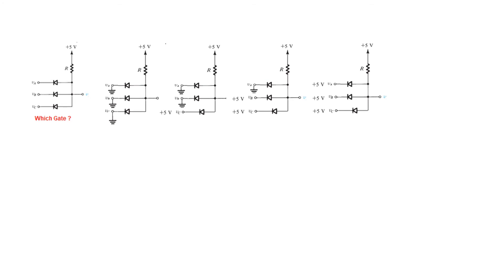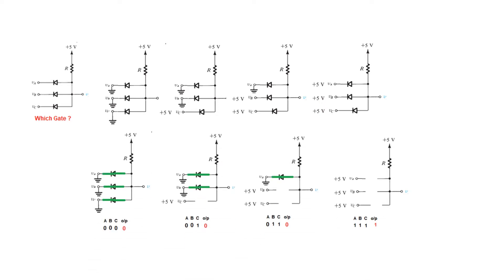Now let's look at this option, where the anode is connected towards this side and the cathode to the left-hand side. We proceed with the same logic. First, we make all three inputs ground. Then we try two ground and one VCC, then one ground and two VCC, and then all three VCC or 5V. In this case with all inputs at ground, all three diodes are forward biased, and forward bias means this point is now connected to ground, so the output will be zero.